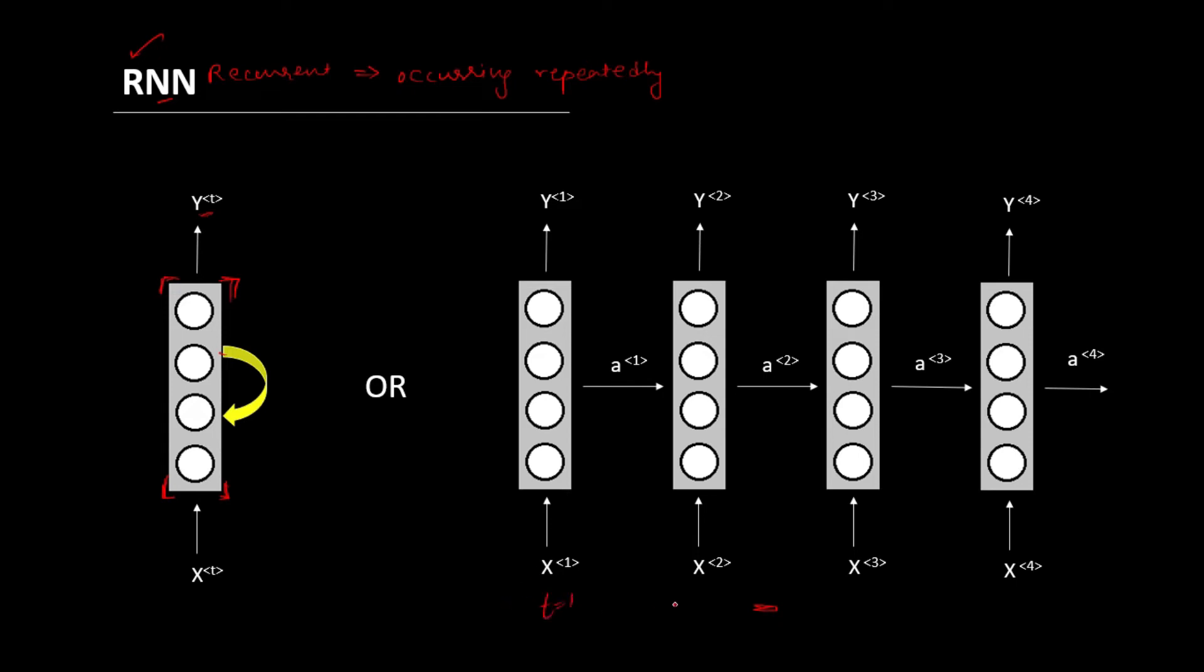So for example, this is time equal to one. This is time equal to two. This is time equal to three and so on. This is the same neural network. We will be able to understand this better with the help of an example.